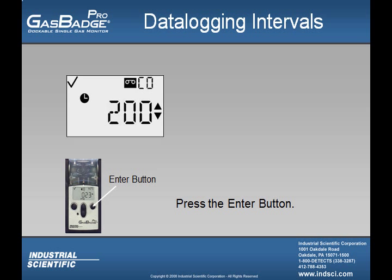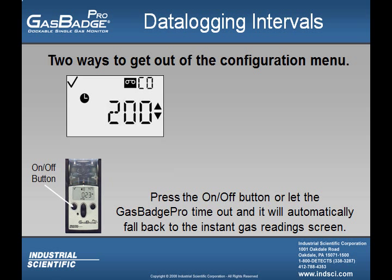Once the user has the Gas Badge Pro's data logging interval set up, they must press the enter button and that value is now stored in the instrument. There are two ways of getting out of the configuration mode: the user can press the on-off button, or they can let the instrument time out, after which the instrument will go directly back to the instant gas reading screen.